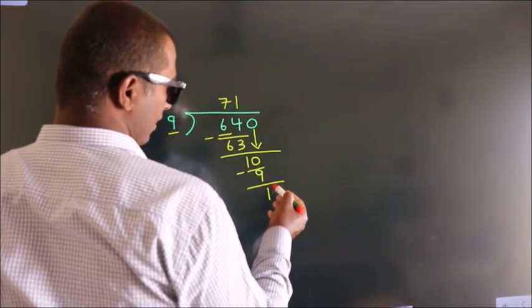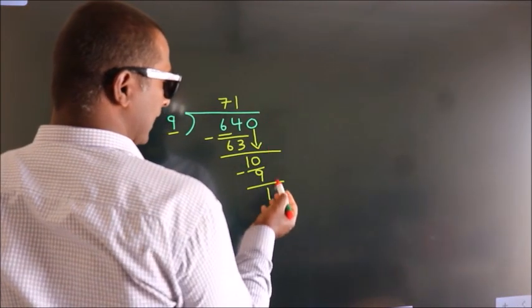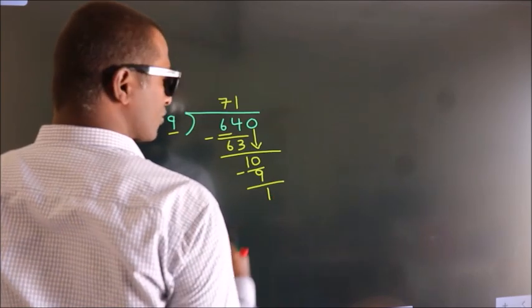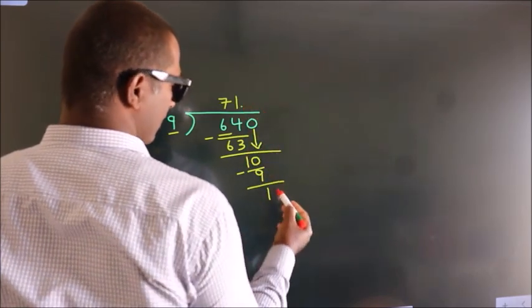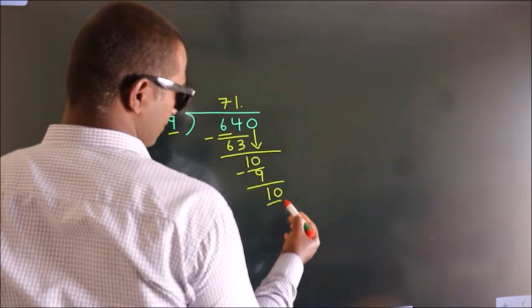After this, no more numbers to bring down. So what we do is we put a dot and take 0. So 10.